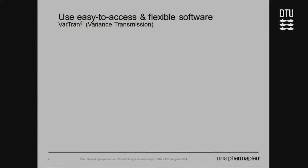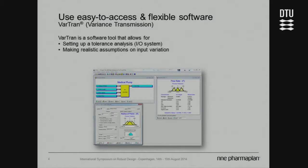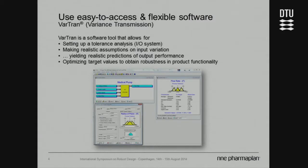First up: easy-to-access and flexible software. We chose VATRAN, short for variance transmission. VATRAN is a small software that allows you to set up a basic I/O system — you have inputs, you have outputs, you link them through a transfer function. Very importantly, it allows you to make realistic assumptions about the variation, not just choosing the distribution, but also making additional assumptions about how this distribution can move. And VATRAN allows you to do simple optimization of inputs to make your design more robust.